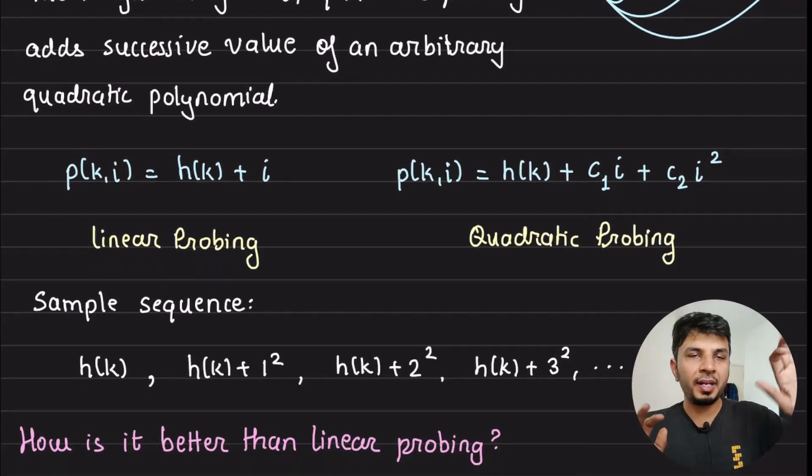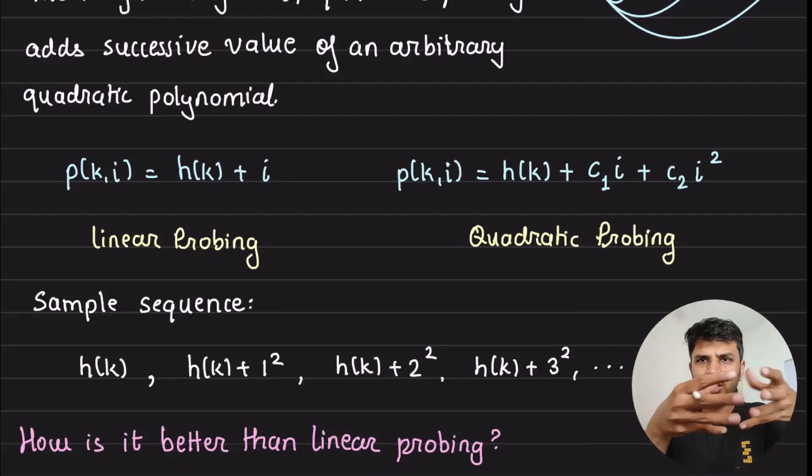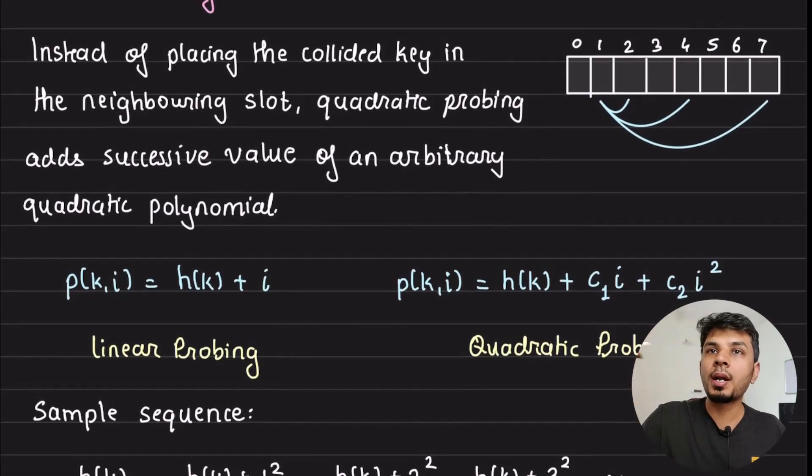Instead of putting the key in the next available slot immediately to the right by moving one step at a time, what we do is we find the successive value through an arbitrary quadratic function. So linear probing, what we did is p(k,i), which is a probing function, where i is the attempt number, is equal to h(k) plus i, where h(k) is the hash of the key that gives you the primary slot and i gives you the offset. So offset will start from 0, 1, 2, 3, 4, 5, 6, which means you are literally traversing through the array one after another one slot at a time until you find an available slot.